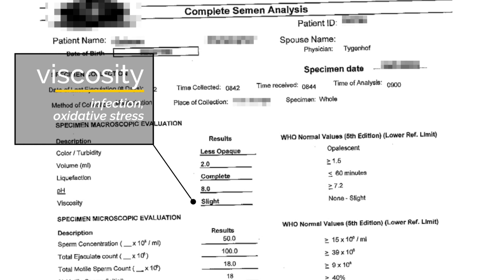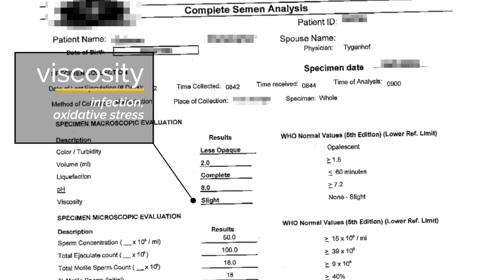Viscosity of the semen can relate to infection or oxidative stress. It's a measure of how thick or watery the semen is. Oxidative stress is when too many free radicals or damaging particles are present in the semen. If this is the case for you, your doctor may recommend antioxidants such as vitamin C or E. When the semen is too thick, it can inhibit the movement of the sperm.